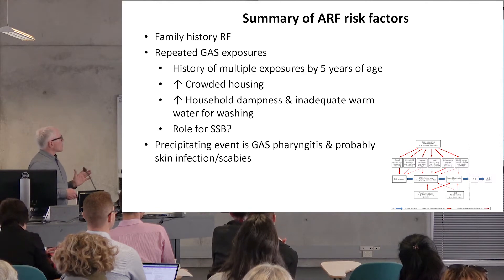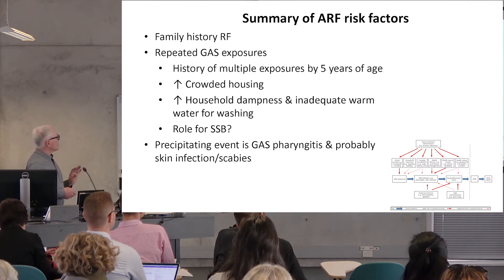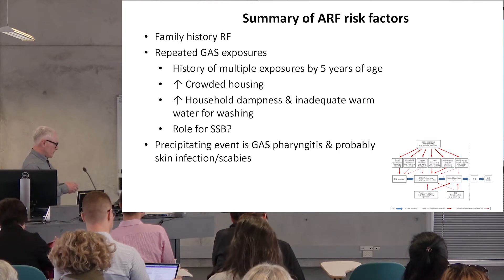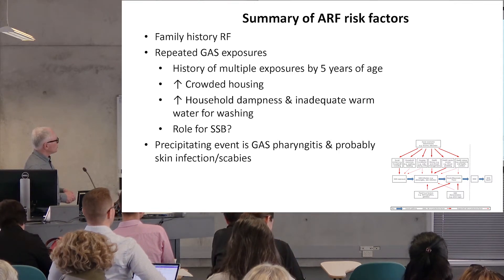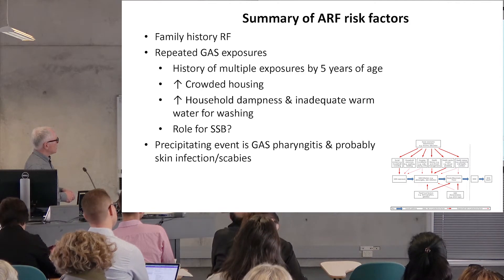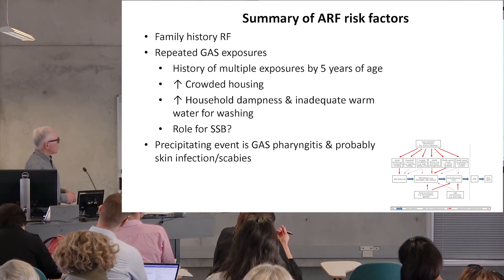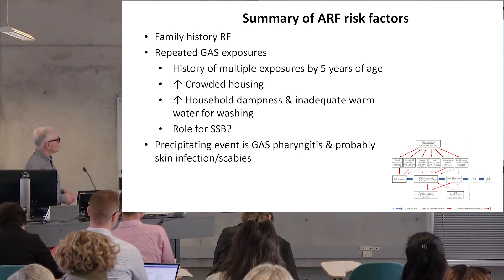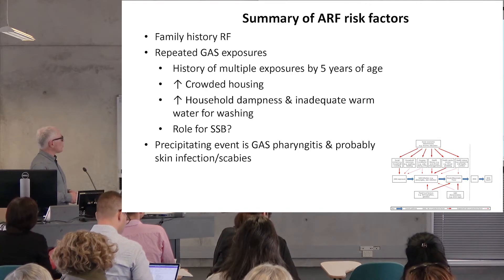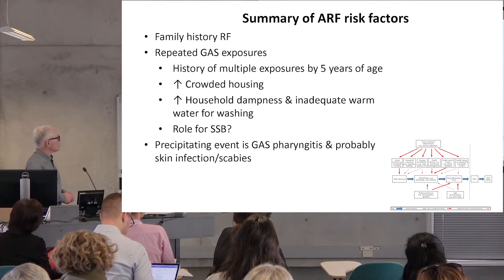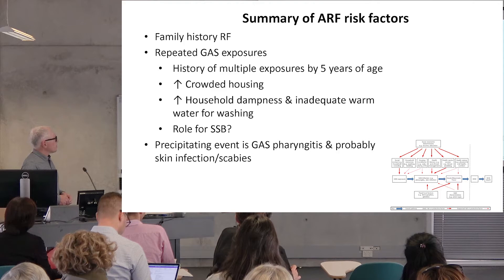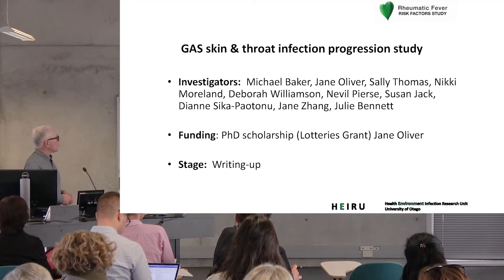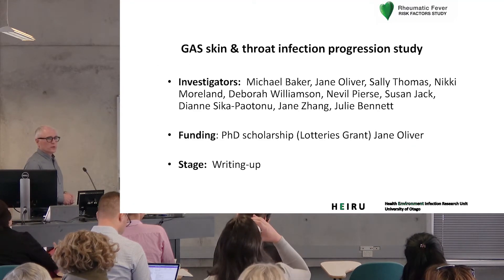Putting all this together, the risk factors for ARF include multiple exposures to group A strep, increased household crowding, poor housing conditions, inadequate water for washing, and possibly some nutritional factors. The precipitating event looks like it can be pharyngitis, and probably also scabies, and possibly also skin infections.